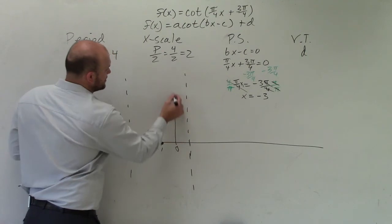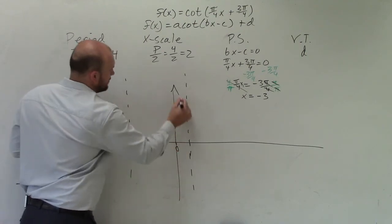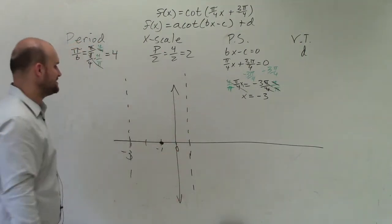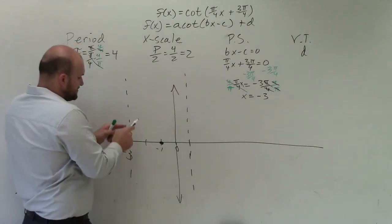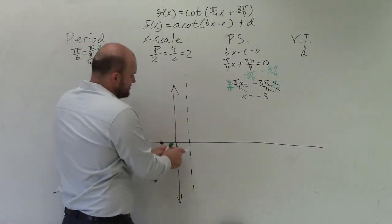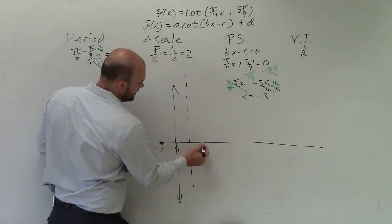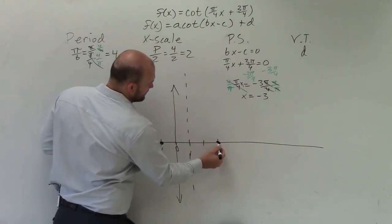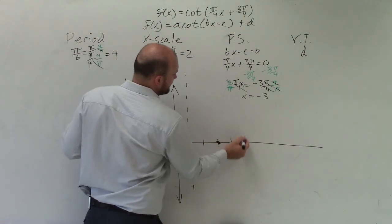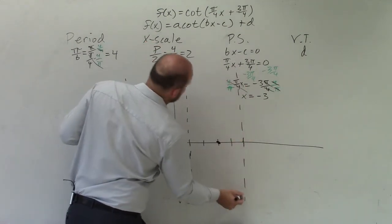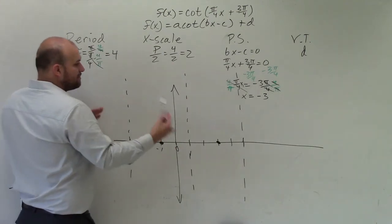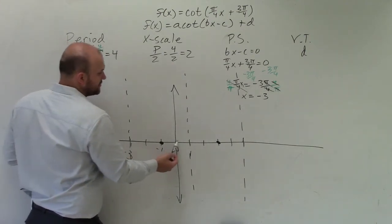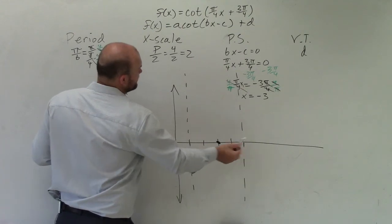And you could even say, 0, there's like the y-axis or the f of x-axis. But remember, the x-scale tells you the distance from the asymptote to the intercept. Then the next intercept's going to be at 1, 2, 3. And then the next asymptote will be at 4, 5. And we only need to include two periods. The period, just make sure that the distance, the time it's going to repeat itself, is going to be four units. 1, 2, 3, 4. Perfect.